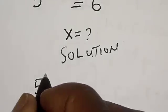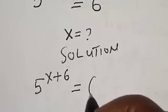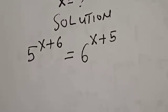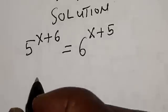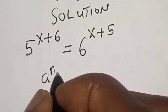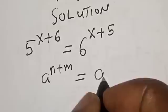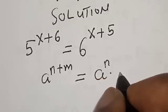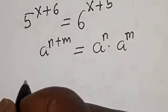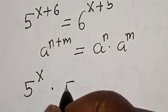5 raised to power s plus 6 is equal to 6 raised to power s plus 5. Remember this identity: a raised to power n plus m is equal to a raised to power n multiplied by a raised to power m. So 5 raised to power s multiplied by 5 raised to power 6...